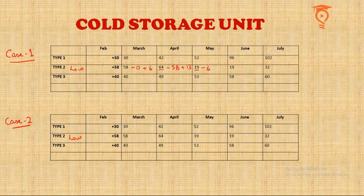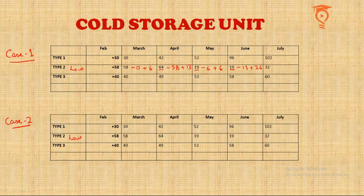In May, 6 more are added again to make 19, which appears at the beginning of June. At the beginning of July we have 32. The 13 added in April are now subtracted, leaving only 6, and 26 more are added. We can't go further since we don't have August numbers, so this is sufficient for the low quality analysis.